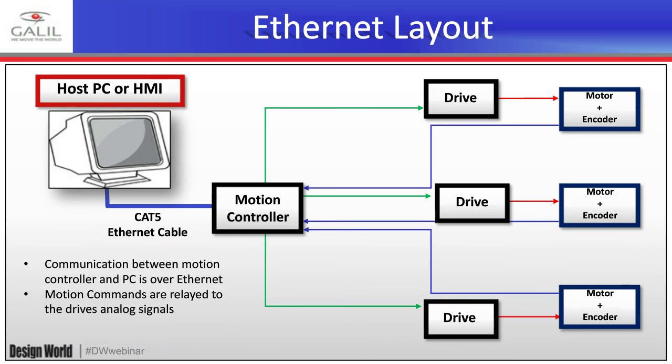In contrast, here's an Ethernet layout: a host PC or HMI in the control center communicates with a motion controller over CAT5. The motion controller then communicates with the drives via analog control reference voltage, or step and direction if it's a stepper, and relays that information back to the PC. The deterministic real-time motion is handled on the motion controller, as opposed to the PC — specifically because Ethernet communication is not deterministic, unlike EtherCAT.